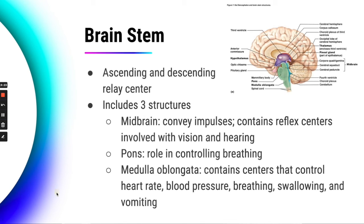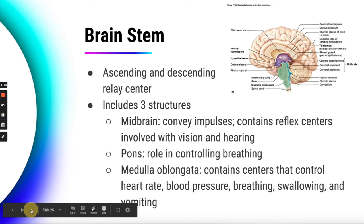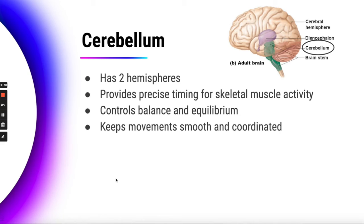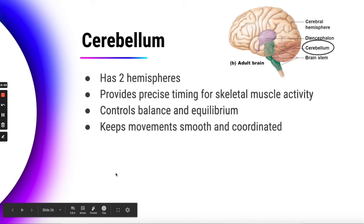Finally, the cerebellum has two hemispheres just like the cerebrum and provides precise timing for skeletal muscle activity — coordinating balance and maintaining equilibrium. When you reach for a glass of water, that arm movement is smooth rather than jerky and uncoordinated, and that smooth motion is because of the function of your cerebellum.